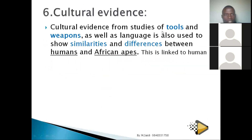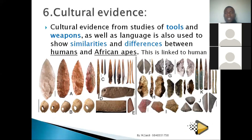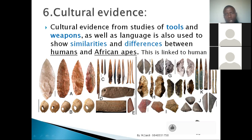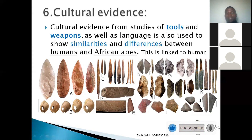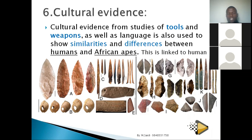The final evidence is cultural evidence, which is mainly linked to humans. It shows how early humans used tools. In human evolution, we have different stages — for example, Homo habilis, which means 'handyman' in English, refers to the people who used tools and fire.